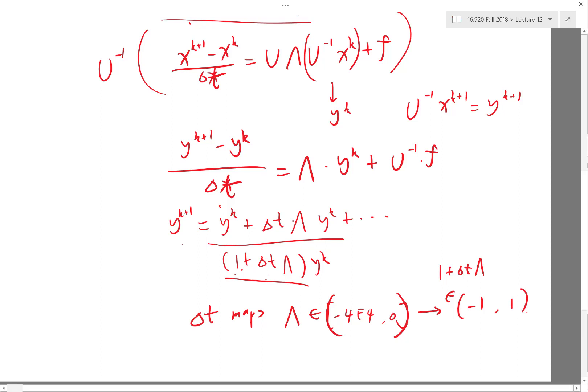Okay, so what is the proper delta t to achieve that? The proper delta t to achieve that, especially to map this into... basically that means delta t times my most negative lambda, times the lower bound, has to be equal to minus...